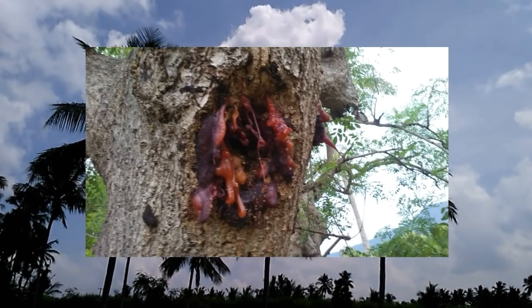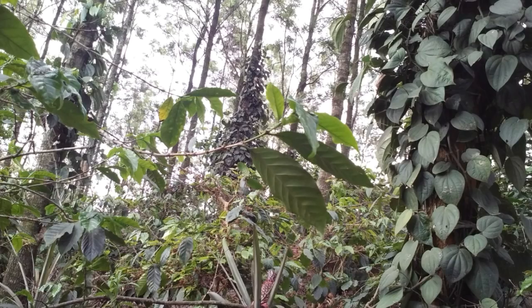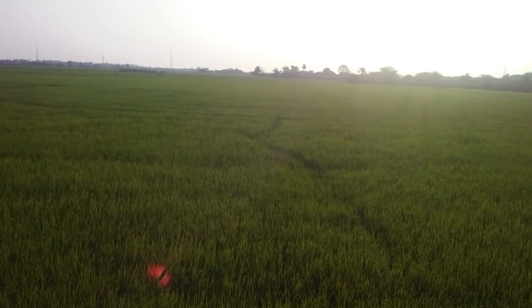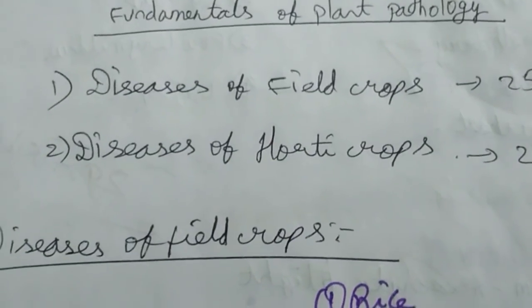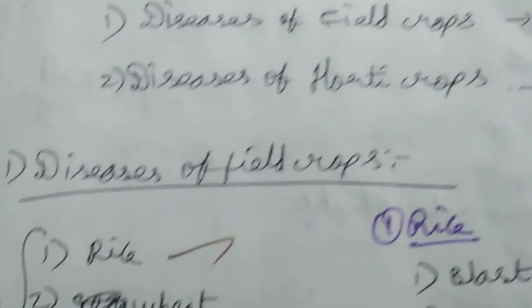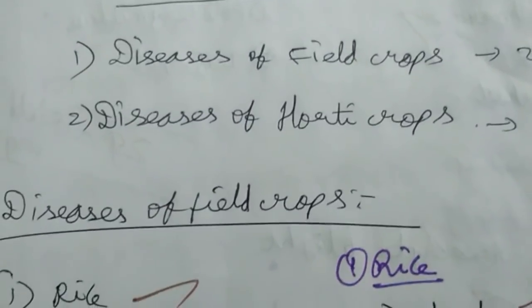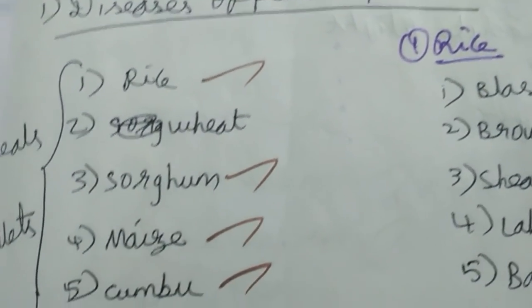Let's talk about this course. There are a lot of diseases. We have to collect a herbarium and submit it. If we collect the herbarium and press it open, we will see the first two crops — diseases of field crops and diseases of horticultural crops. We will collect 50 herbarium specimens.